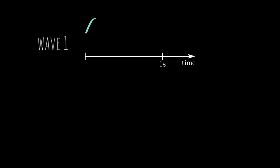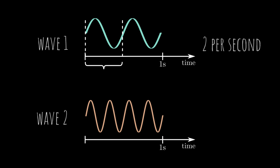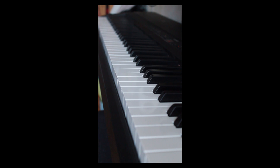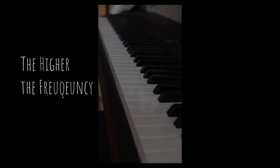For example, wave one occurs two times in one second and wave two occurs four times in one second. So wave one has a frequency of two per second and a period of a half second, and wave two has a frequency of four per second and a period of one fourth of a second. The unit per second is also called hertz. A piano has tones from approximately 16 to 5,500 hertz, and the higher the frequency, the higher the tone.